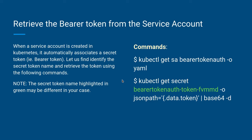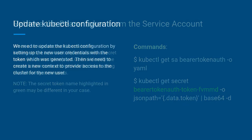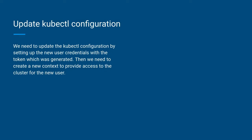Once we have the bearer token, we need to update the kubectl configuration. The kubectl configuration has three main parts: the cluster part, the context part, and the user part. The user part is where we update the credentials. We update the bearer token for the service account using kubectl config set-credentials. Once the user is added, we need to create a context — basically a mapping of a user to a particular cluster so they can access it.